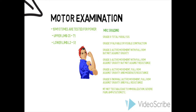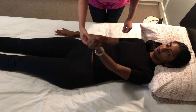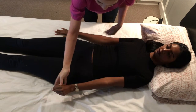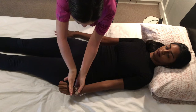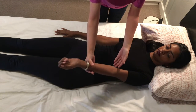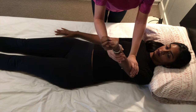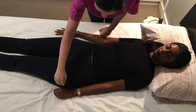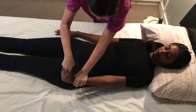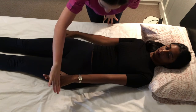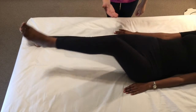Now we will demonstrate the upper and lower limb motor examination, which should include both sides of the body. First is C5 elbow flexors, C6 wrist extensors, C7 elbow extensors, C8 finger flexors, and T1 finger abductors. Now we will move on to the lower limb.